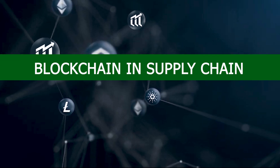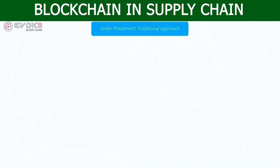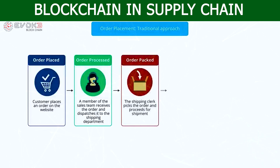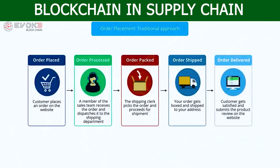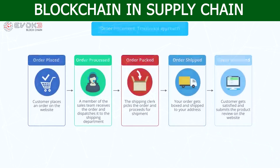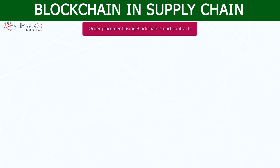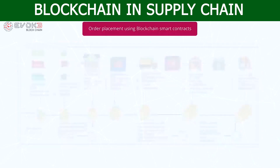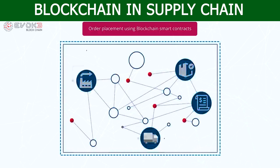Blockchain in supply chain. In the traditional approach of placing an order, a customer places an order on the website; a sales team member receives it and dispatches it to the shipping department; the shipping clerk picks the order and proceeds for shipment; the order gets boxed and shipped; and the customer submits a product review. Introducing blockchain smart contracts in the supply chain modifies the traditional ecosystem of transferring goods from wholesaler to retailer and then to the user. Supplier order invoices and shipment data are stored in the blockchain database, making it tamper-proof and a secure way of managing shipment.